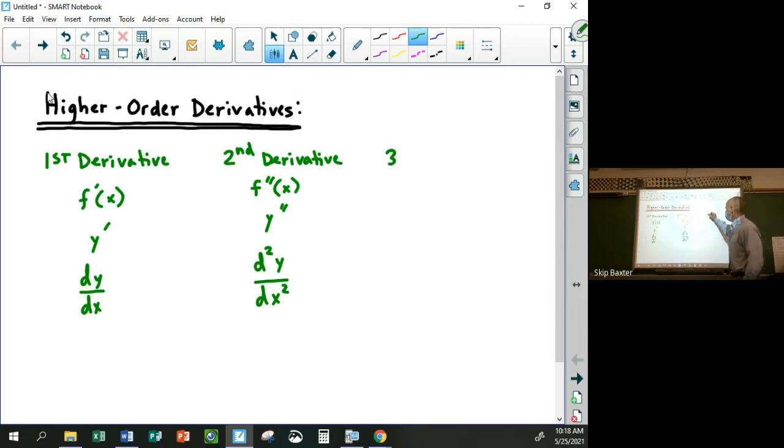So the third derivative is the triple prime, or y triple prime, or d cubed y over dx cubed.